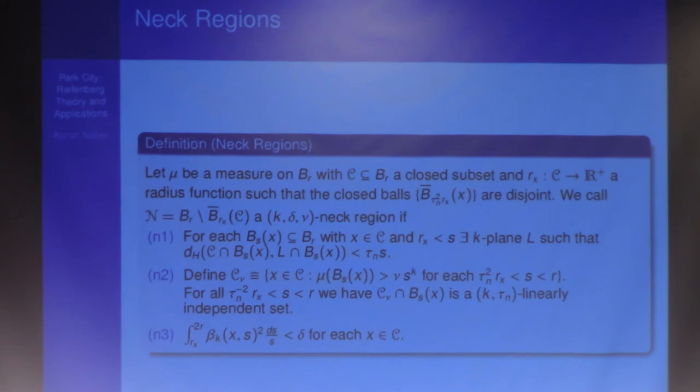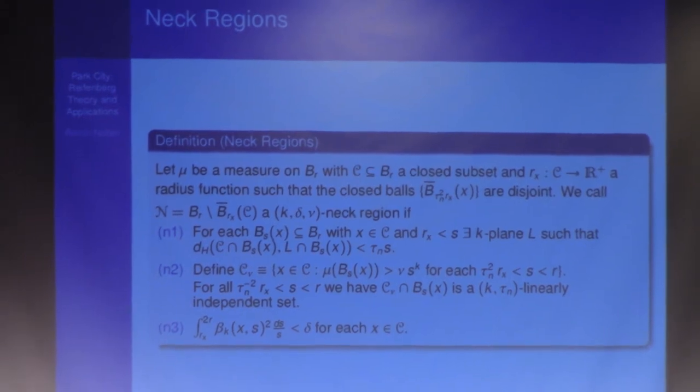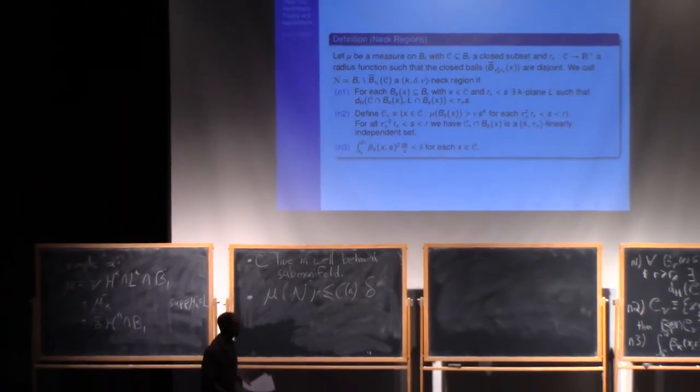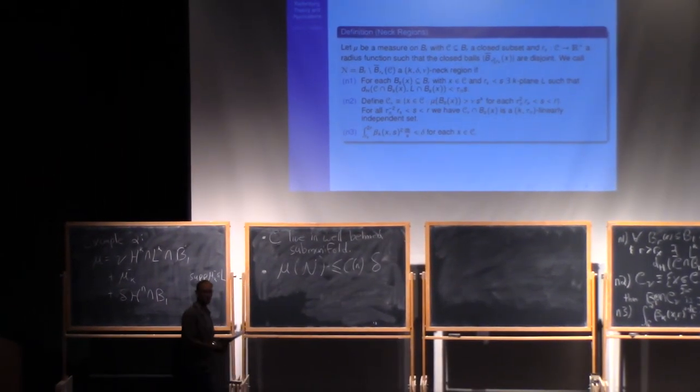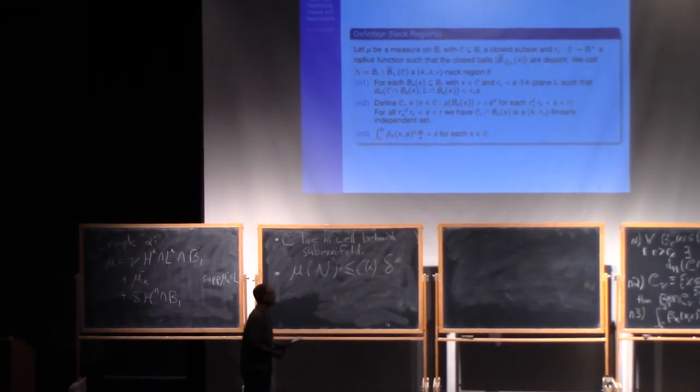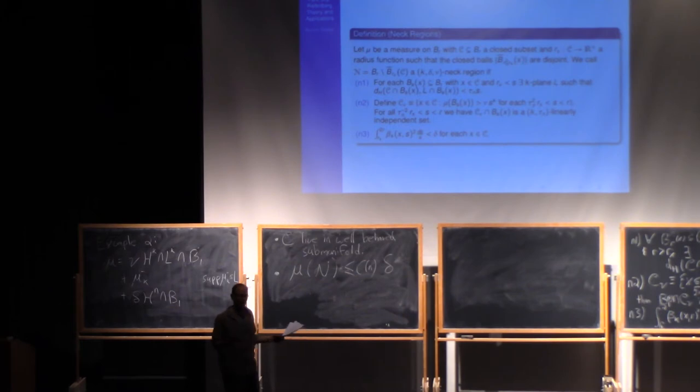However, we do have measure control over all of mu on the neck region. So, mu of the neck region now is bound by some dimensional constant here, times delta. So, what you've now done is say that you've got this collection here for which you have Hausdorff and Minkowski control over this. This is a very well-behaved Hausdorff sort of set of balls. And away from it, the full-blown measure of mu is bounded. This is very much in the spirit of what we're trying to do. And the main theorem, of course, is going to be that that's not an accident, that that's what's always going to happen.